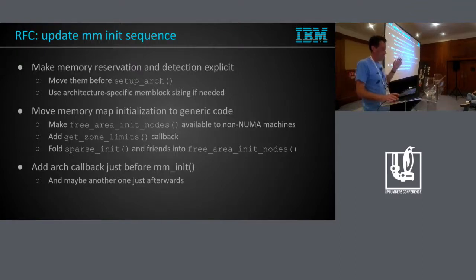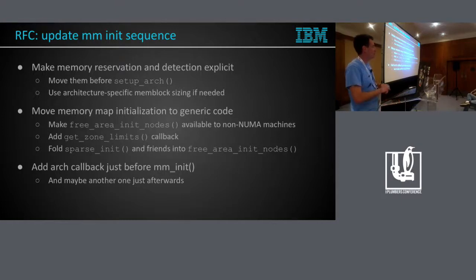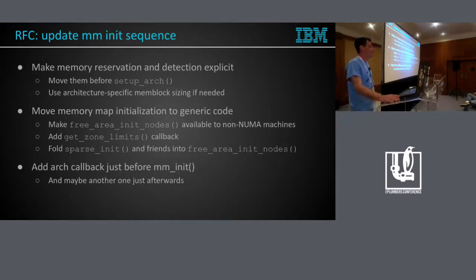I really hoped to have something done by now but it didn't work out. My idea was to move memory detection and NUMA topology detection before setup_arch as explicit callbacks, so every architecture would have to explicitly implement them and not have them as a part of setup_arch. That makes it clearer. If an architecture has too many memory banks to fit in the statically pre-allocated memblock memory array, we already have a Kconfig knob to increase this, thanks to ARC.